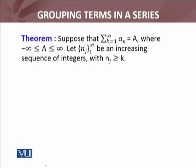So let's see the theorem about grouping of the terms in a series. Suppose that summation k equals 1 to infinity, a_k equals a, where a is from the extended real number system — a can be infinity, minus infinity, or any real number. अब अगर a finite है, we will say that this series is convergent. If a is plus infinity, then we will say that this series is divergent and it diverges to infinity. Minus infinity के लिए भी इसी तरह की term है कि series will diverge towards minus infinity.